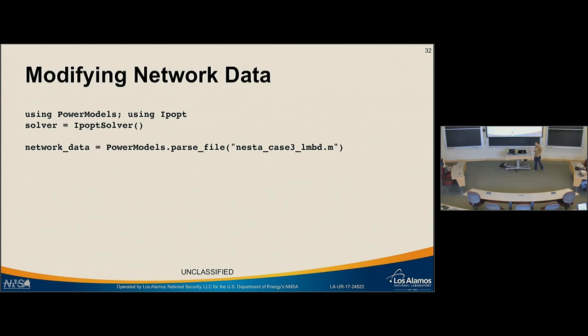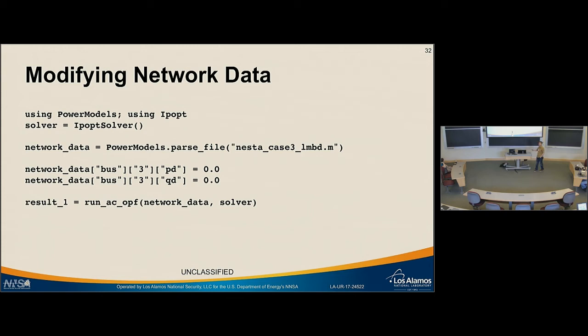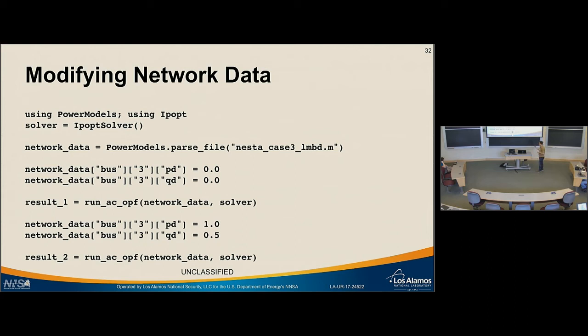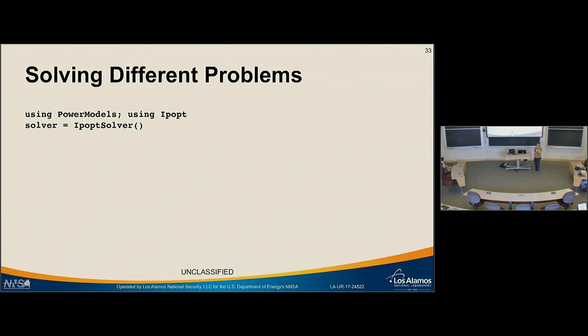Modifying network data is super easy. You just parse the data into PowerModels, getting back a dictionary, and you simply modify the dictionary. You can then send that dictionary directly to any of the run methods and it'll work. The run methods are overloaded—you can send them a string and it'll parse the file, or give them a data structure and it'll use it directly. Then you can modify it again and run it again.